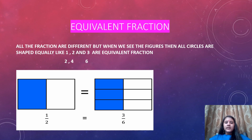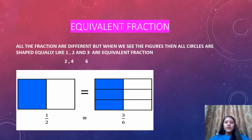Equivalent fractions. All the fractions are different but when we see the figures, all circles are shaded equally — like 1 upon 2, 2 upon 4, 3 upon 6 are equal in fraction. This is the image of equivalent fractions.